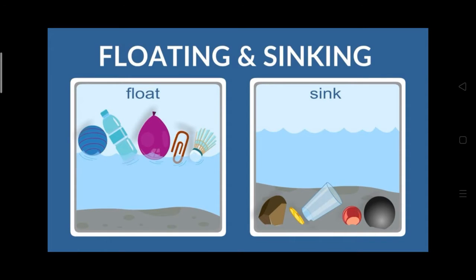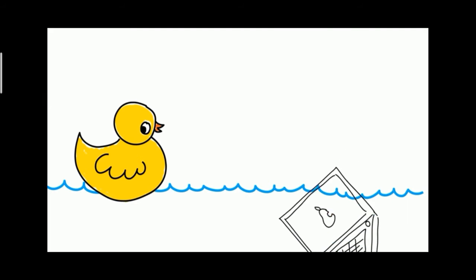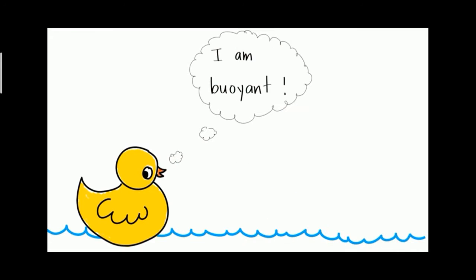If we put something in water, it will either float on the surface or sink to the bottom. Let's learn about floating and sinking today. Let's see what happens to these two objects in water. Here, one object sinks in water and another one floats on the water.